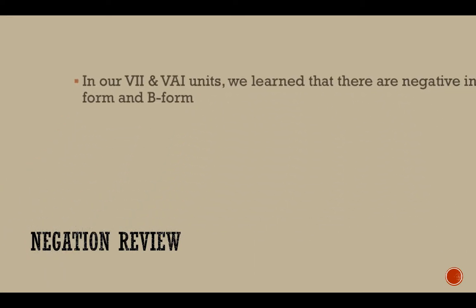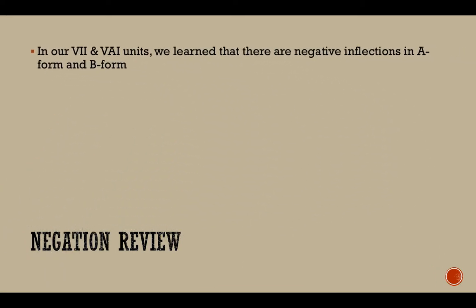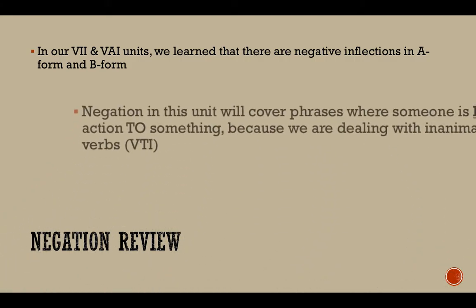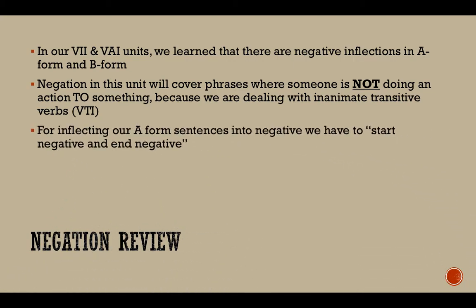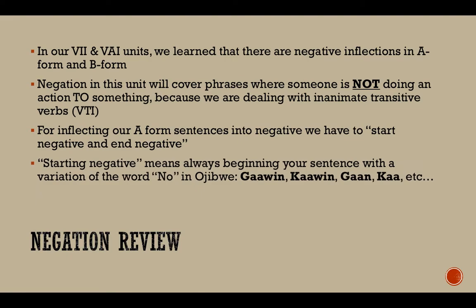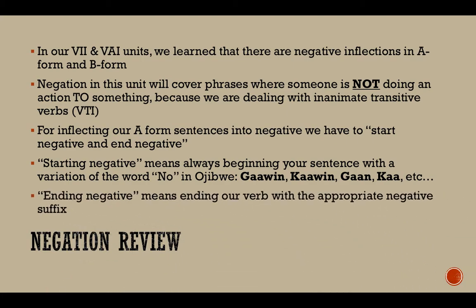Negation review. In our VII unit and VAI units, we learned that there are negative inflections in A-form and B-form. Negation in this unit will cover phrases where someone is not doing an action to something, because we're dealing with inanimate and transitive verbs — VTIs. For inflecting our A-form sentences into negative, we have to start negative and end negative. Starting negative means always beginning our sentences with a variation of the word 'no' in Ojibwe — that's 'go in,' 'call in,' 'gone,' 'call,' etc.